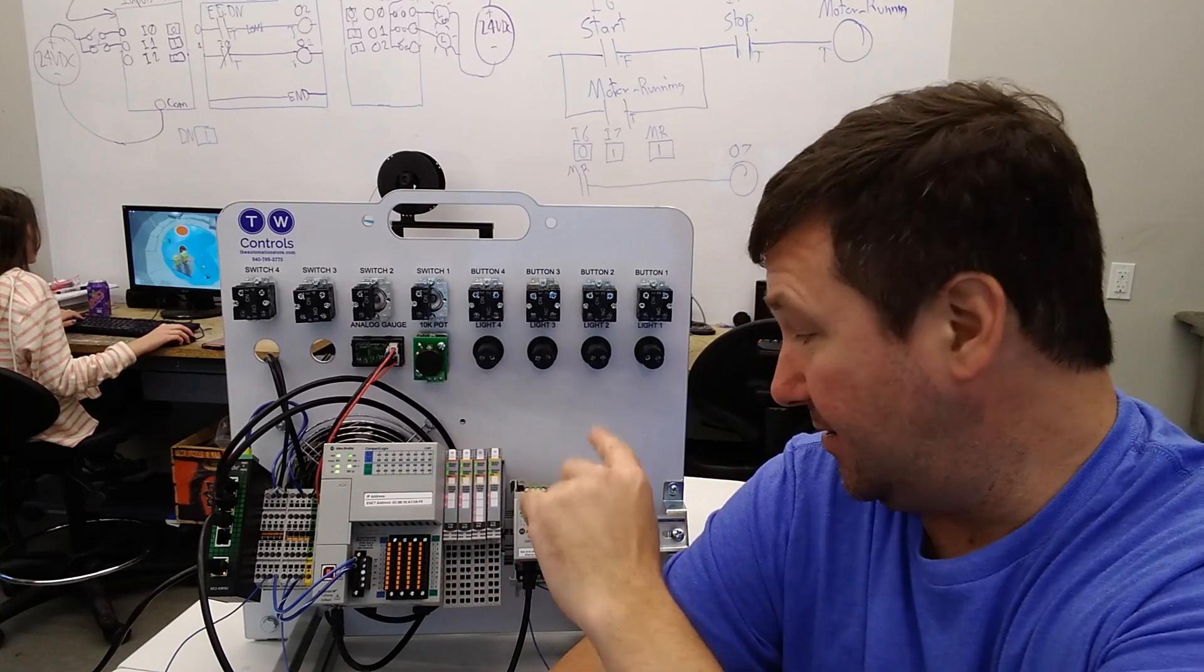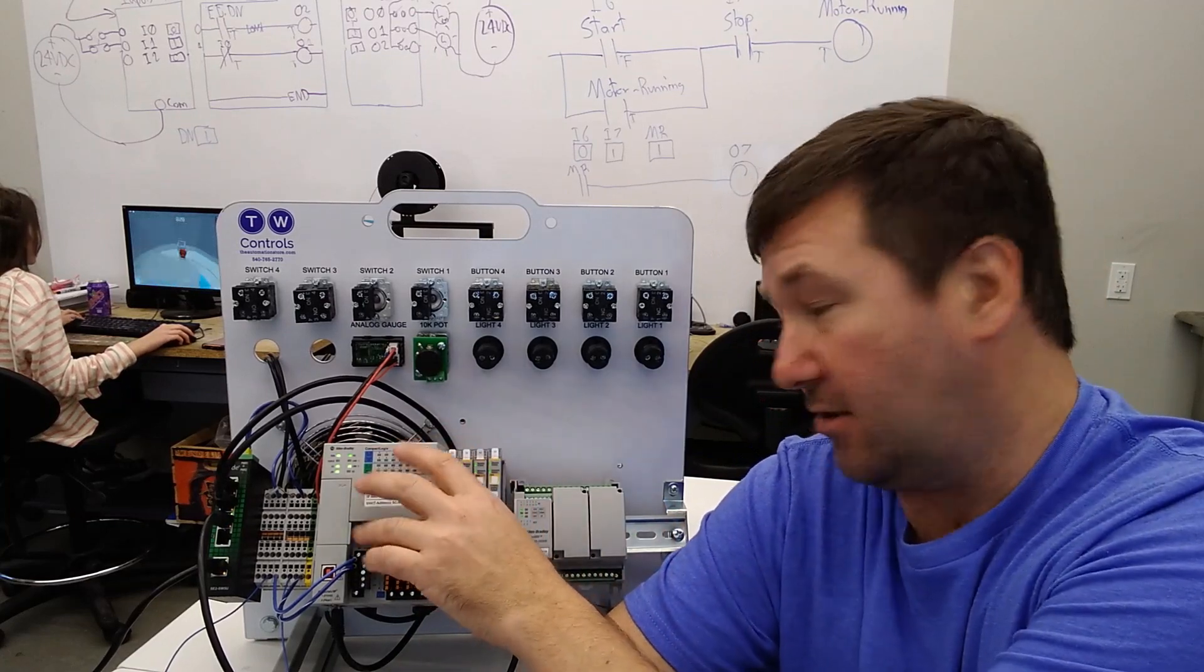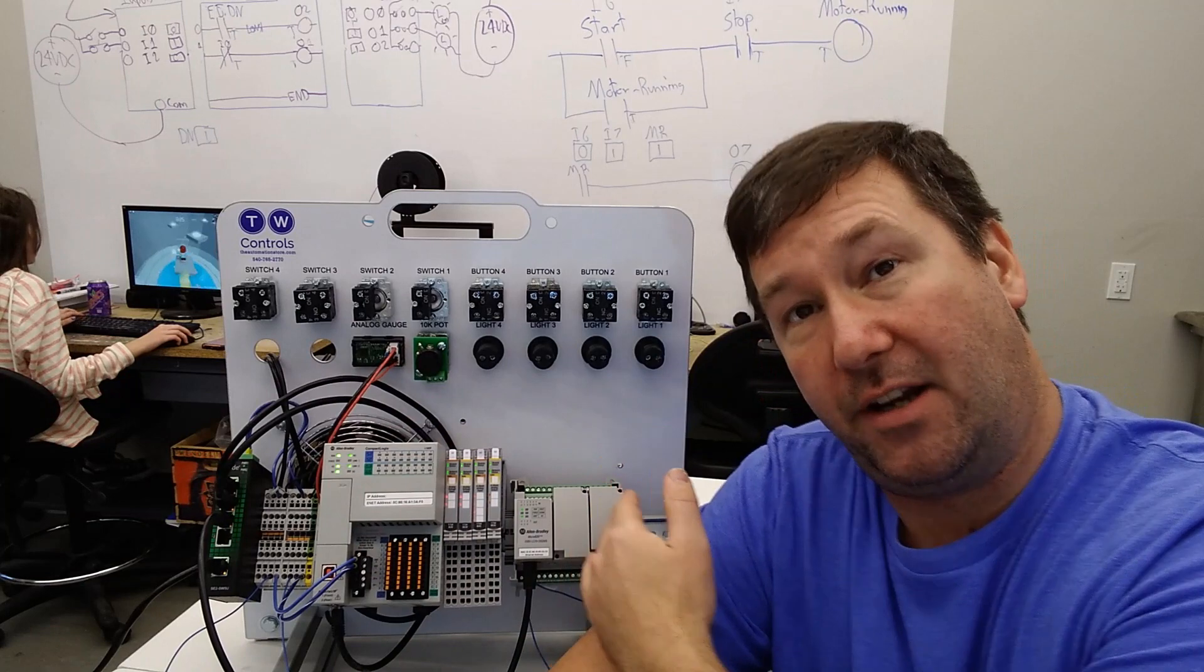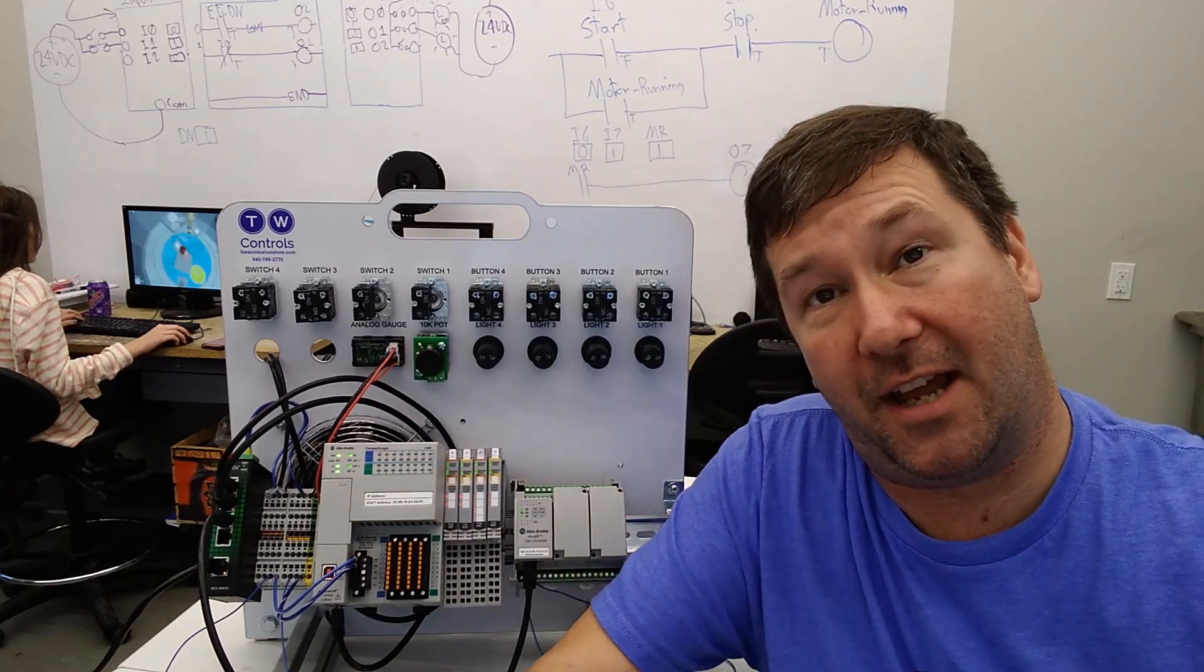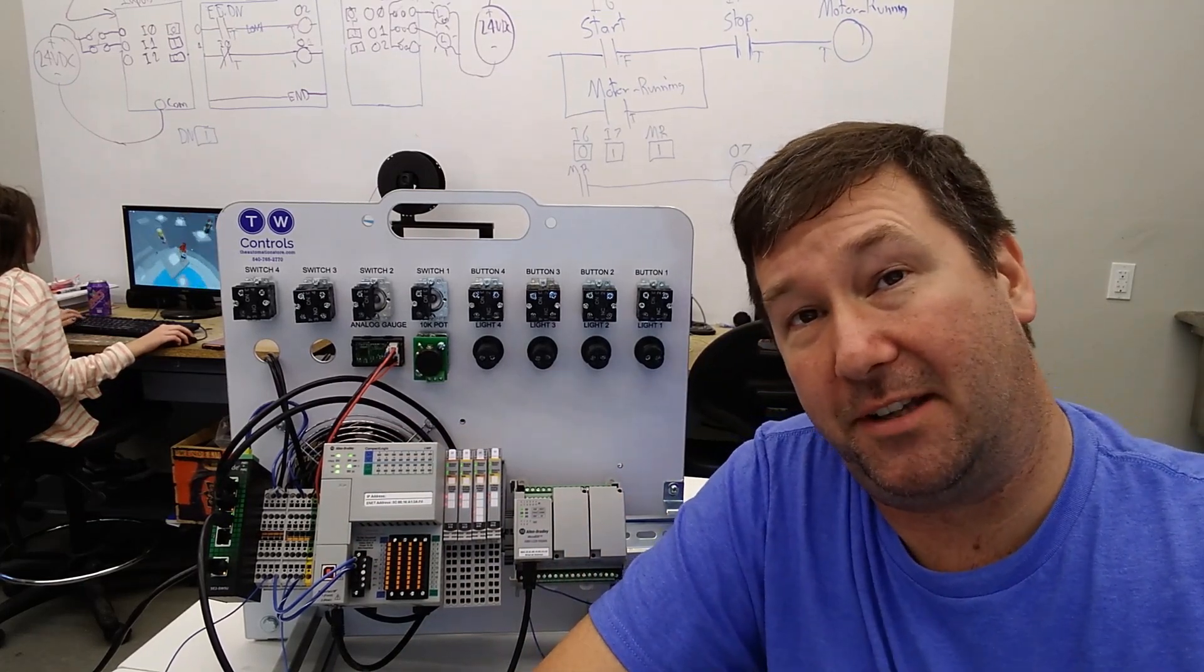If you're looking to do the opposite, read tags from a Control Logix or Compact Logix PLC into a Micro 800 PLC, we also have a video on that. Look down in the description, we'll have a link to it.